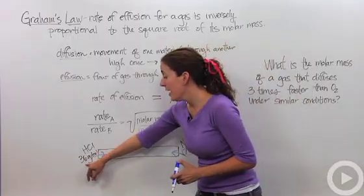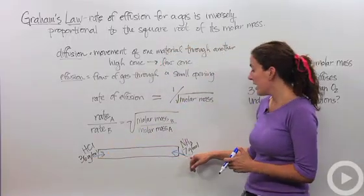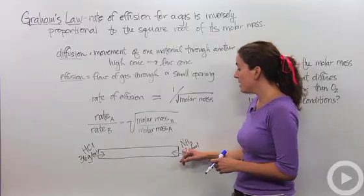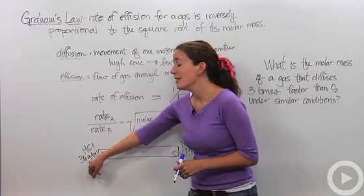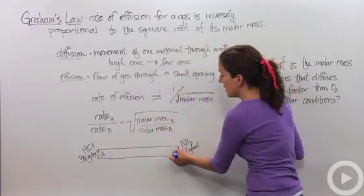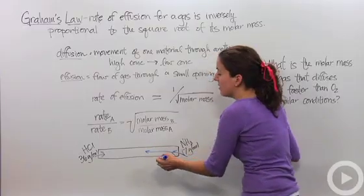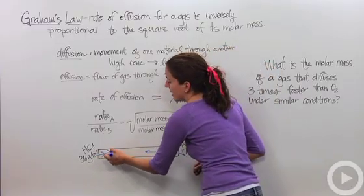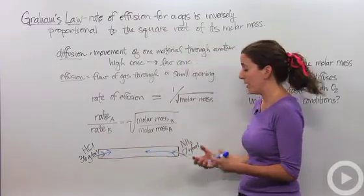This guy is really big and heavy, 36 grams per mole. And this guy is really light and skinny, 17 grams per mole. So this guy should travel faster than this guy, right? So this guy's going to travel fast, fast, fast. This guy's going to travel slow comparatively because it's really heavy and heavy in weight.